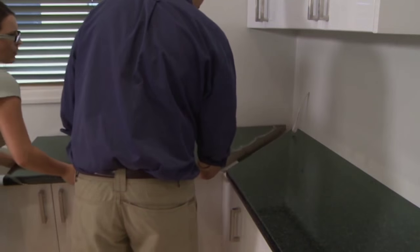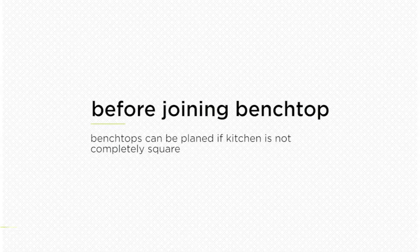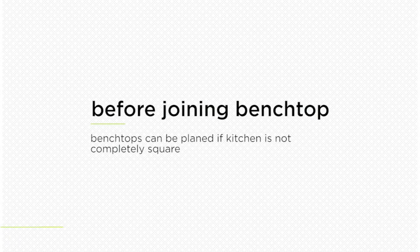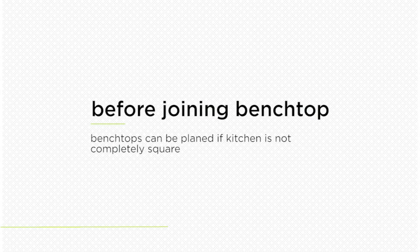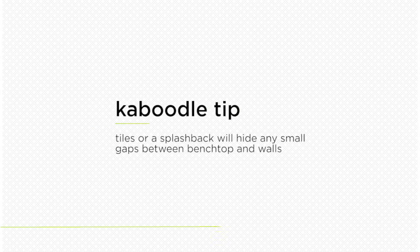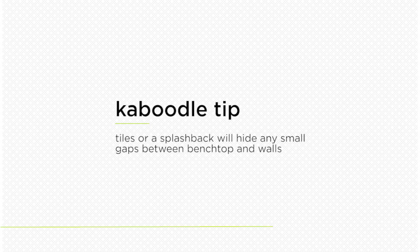Place the two benchtops to be joined in position. Keep in mind that if your walls are not perfectly square, the benchtop can be planed at the back for a better fit if needed. Tiles or a glass splashback with silicon will hide any small gaps or inconsistencies between the benchtops and walls.